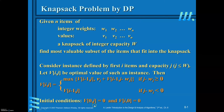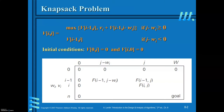The initial conditions are: v[0][j] equals 0 and v[i][0] equals 0. When you are considering the 0th item with any capacity, the value earned is 0 because you are not placing any item into the sack. And when the capacity is 0, even though items are available, you cannot accommodate any item, so the value earned is also 0. These are the two initial conditions required to find the solution.